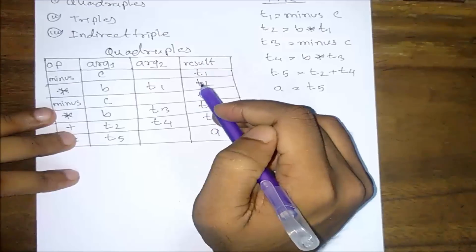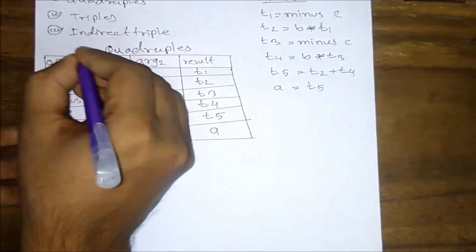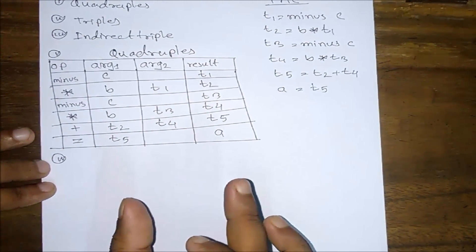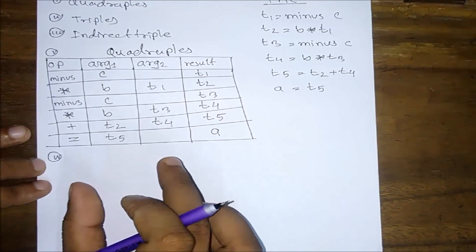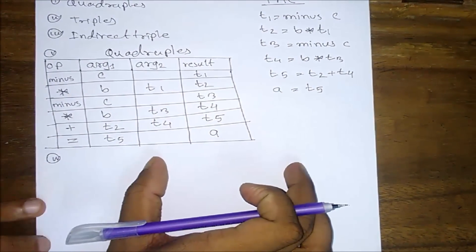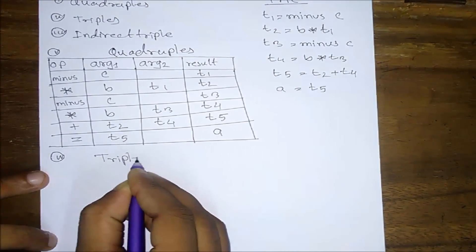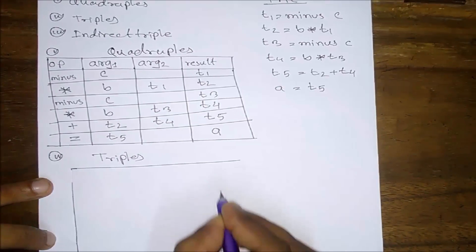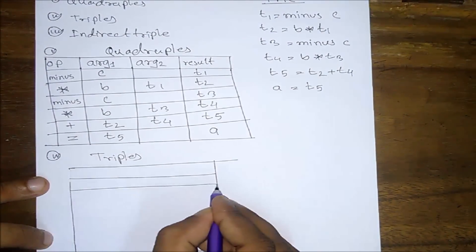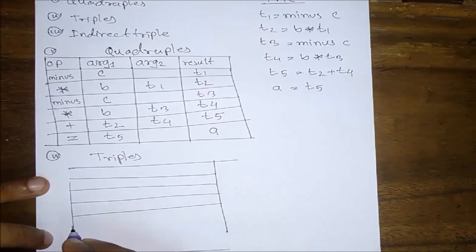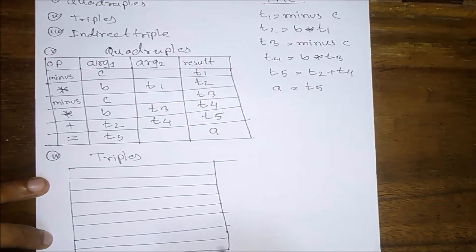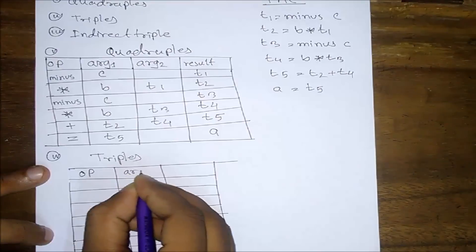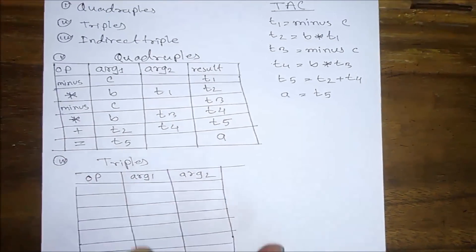So we have the quadruples table complete. Now let us look at the three-address code as triples. Triples have the fields: operator, argument 1, and argument 2 — with different dot notation for referencing positions.